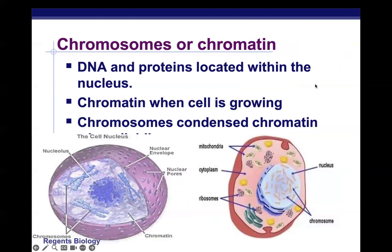Chromosomes exist inside the nucleus and are the structures composed of DNA and proteins where genetic information is stored. Chromosomes are called chromatin when they aren't condensed — when the DNA is long and stringy, which is about 90% of the cell's life cycle. When the cell prepares to divide, that chromatin condenses and we call them chromosomes. So chromatin and chromosomes refer to the same DNA at different points in the cell's life cycle.